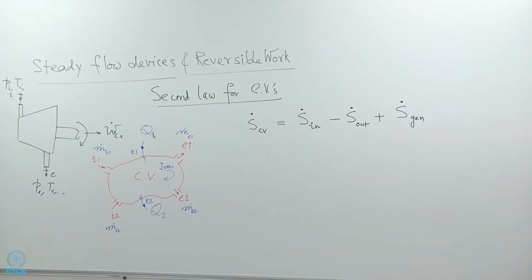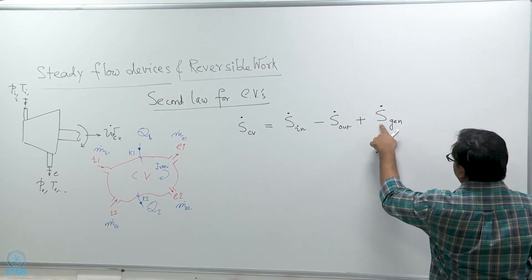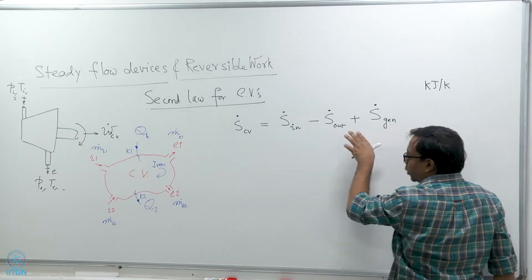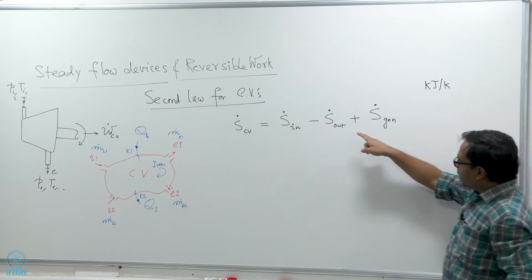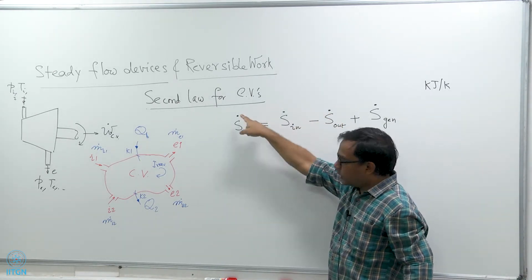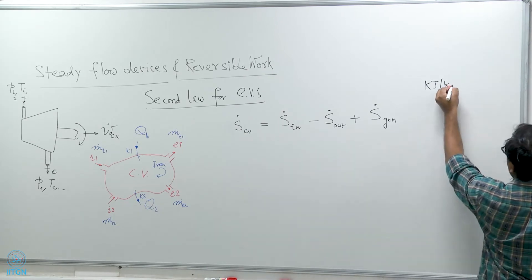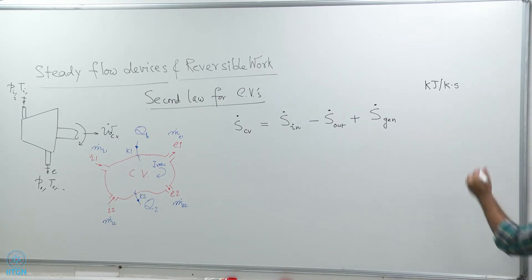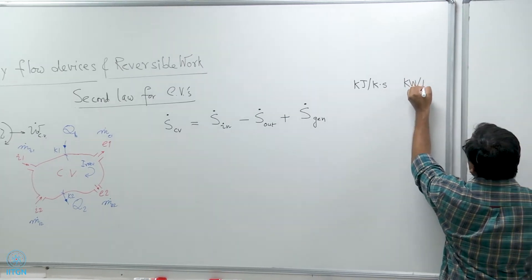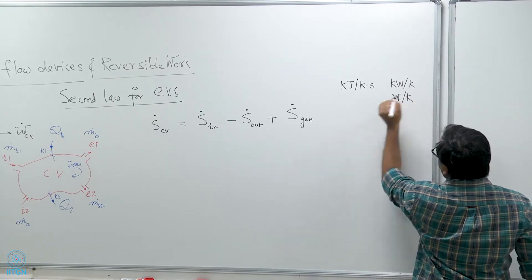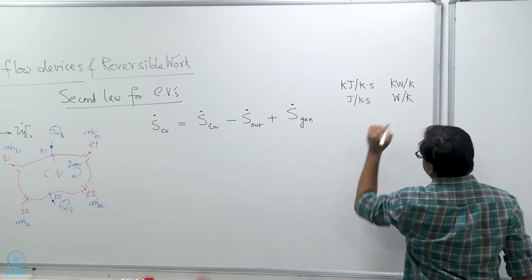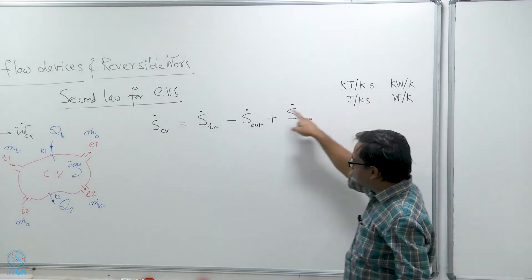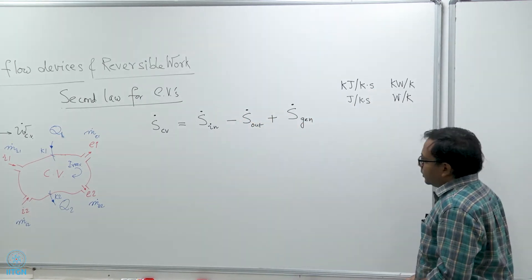Let me also point out the units. Entropy has units of kilojoules per Kelvin — this is the total entropy, not per unit mass. Now we are talking about rates of change of entropy, so we also put a per second, giving kilowatts per Kelvin, or equivalently watts per Kelvin, or joules per Kelvin per second. Any one of these four forms is fine. This second comes in because we are talking about rates.